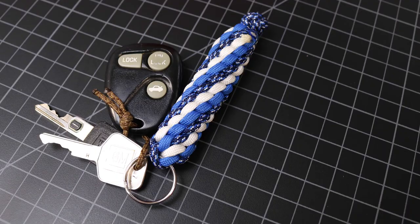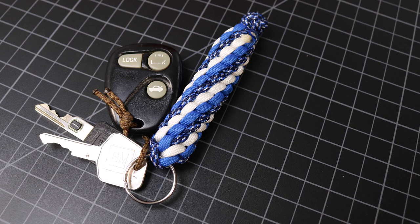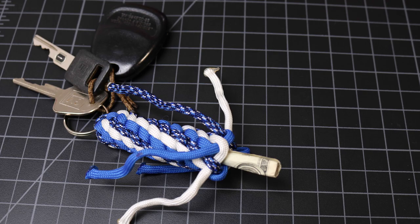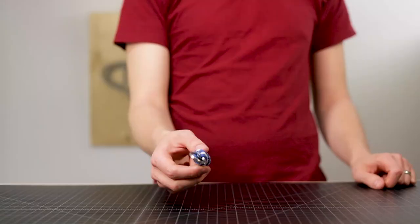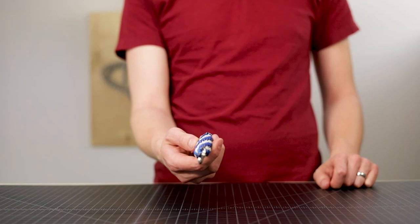So there is our hidden compartment keychain all done. This lanyard knot leaves a little bit of extra cord on the end so that you can re-tie it if you take the money out and want to reuse it. If you enjoyed this video hit the thumbs up. If you want to see more practical creations like this definitely let us know in the comments. Otherwise thanks for watching and we'll see you next time.